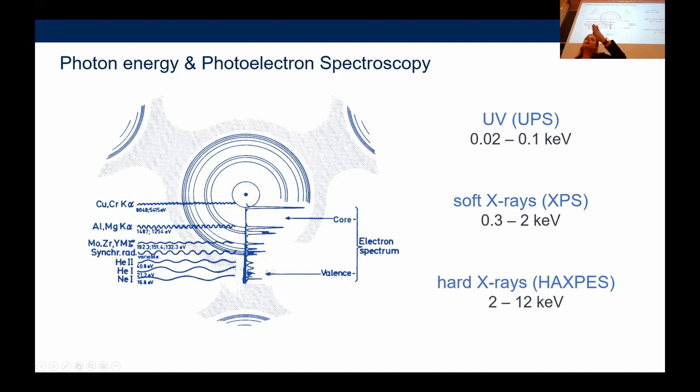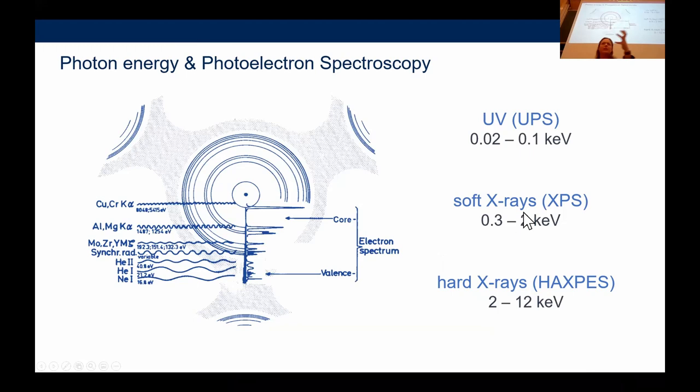The reason for those two numbers: at 2 keV you have to change the type of monochromator — in hard X-rays we use single crystal monochromators. The higher end is limited by what your analyzer can handle; even high-energy analyzers can only go to about 12 keV kinetic energy, maybe 15. Just to put that in context: if you're used to diffraction, that's not hard X-rays — hard X-rays in diffraction means 25 keV or more. But for photoemission, when I say hard X-rays, I mean 2 to 12 keV.